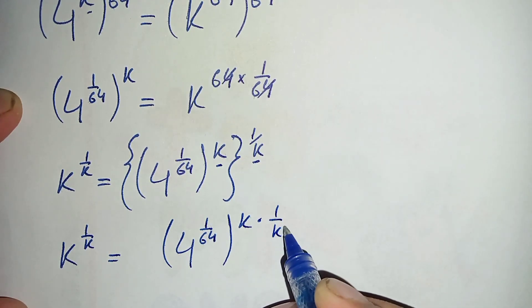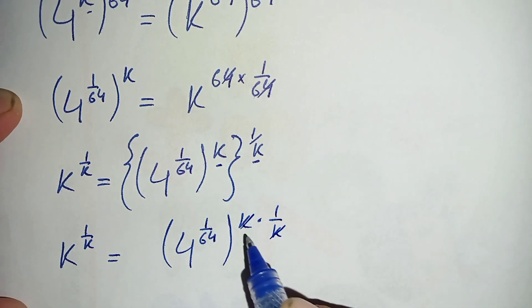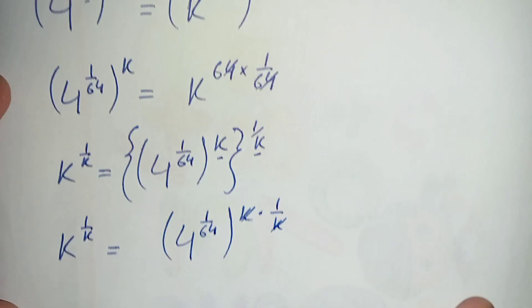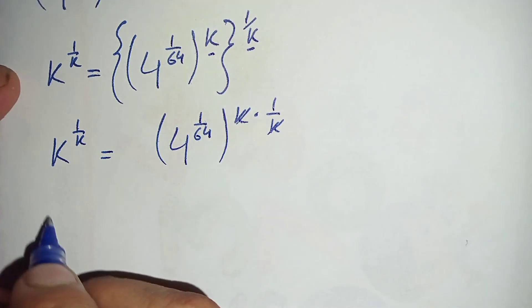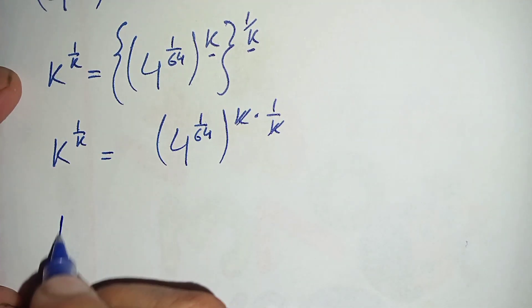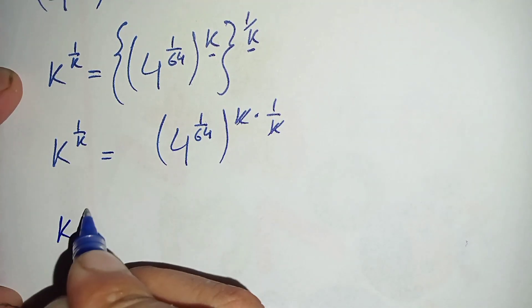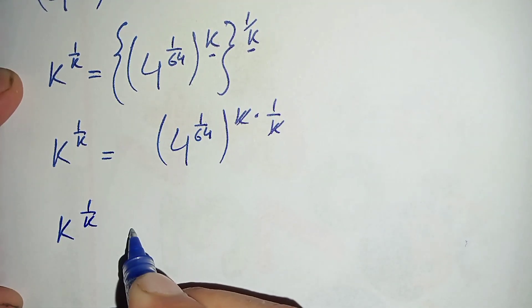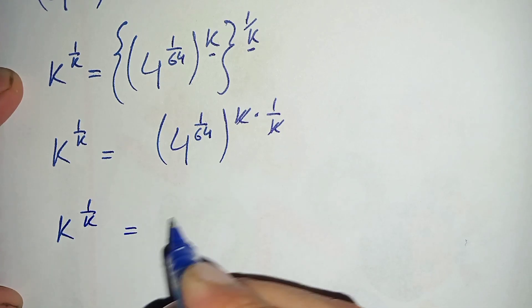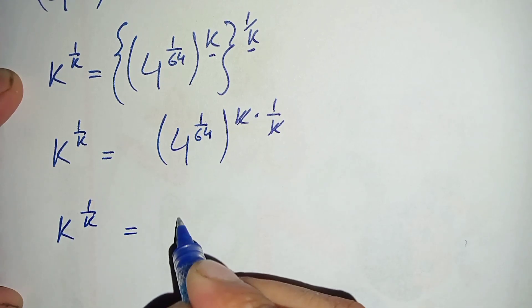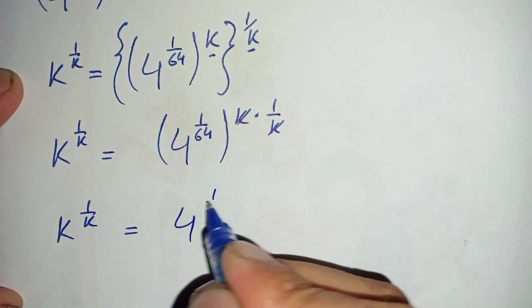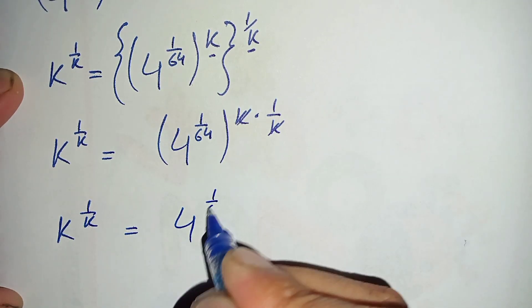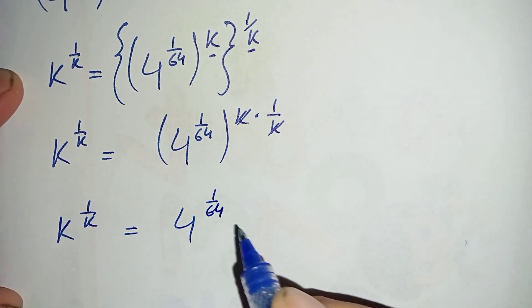The powers k and 1 over k cancel each other. So this gives us k raised to power 1 over k is equal to 4 raised to power 1 over 64.